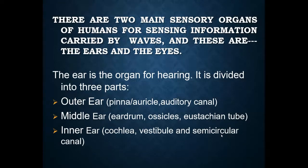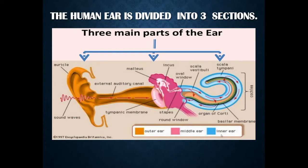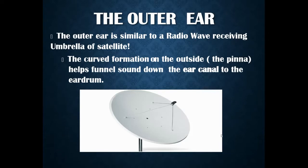The ear is an organ for hearing — without it we can't hear anything. It is divided into mainly three parts: the outer ear, which contains the pinna or auricle and the auditory canal; the middle ear, which contains the eardrum, ossicles, and eustachian tube; and the inner ear, which contains the cochlea, vestibule, and semicircular canal. The gold region is the outer ear, the pink is the middle ear, and the blue is the inner ear.